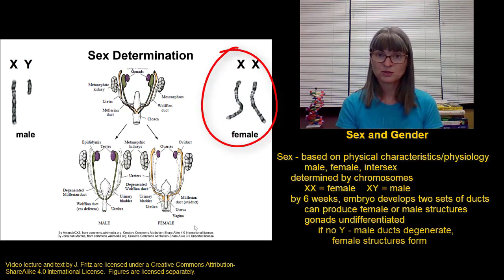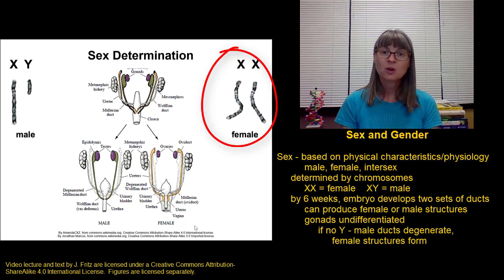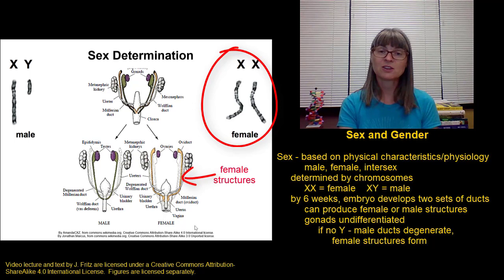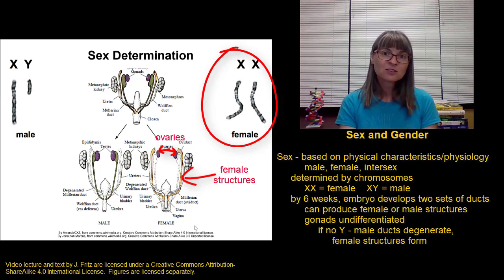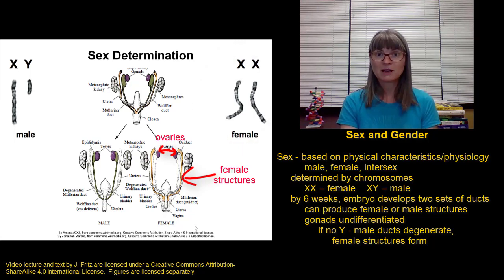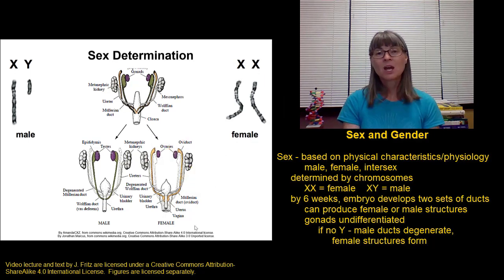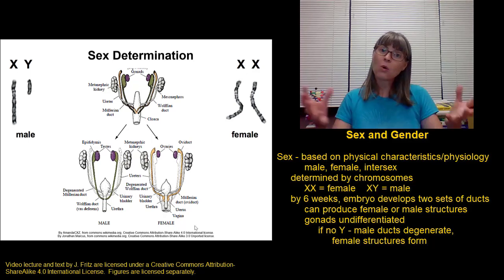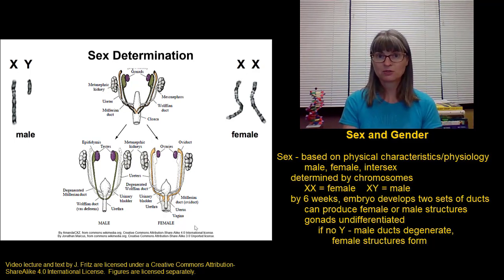If the embryo has two X chromosomes and no Y chromosome, then the ducts that would form the male reproductive structures will degenerate on their own — they don't have the hormones they need to stay present. The ducts that remain will form female reproductive structures like the uterus and the uterine tube, the gonads will become ovaries, and the external genitalia forms the vulva. We typically consider the development of female reproductive structures to be the default — if nothing happens to change it, the ordinary course of development makes things into female structures.